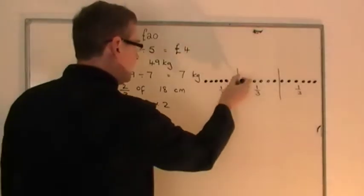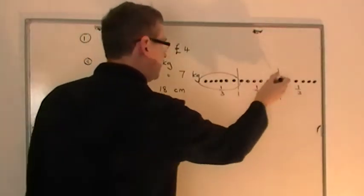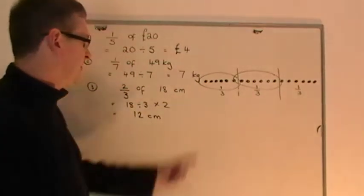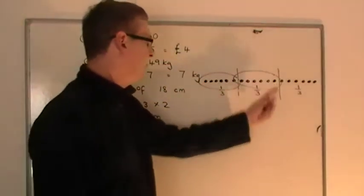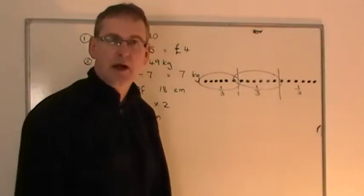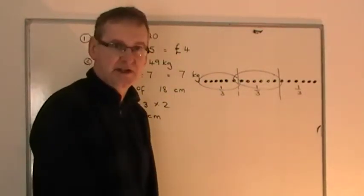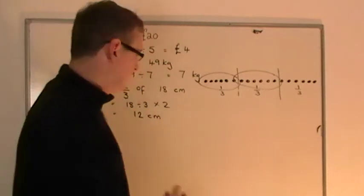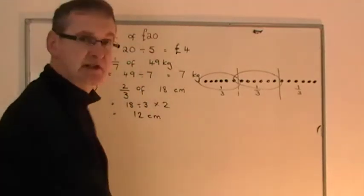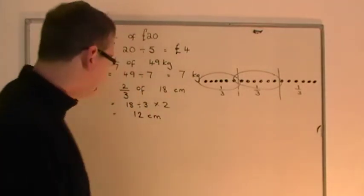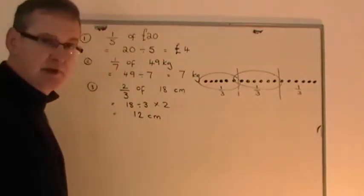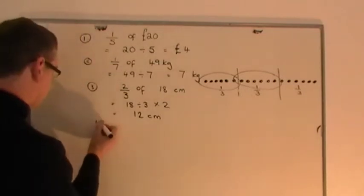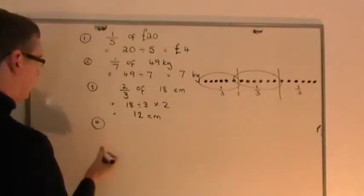So in two-thirds there's one-third, then another third — two-thirds. In those two-thirds you'll have twelve, whatever they may be: pound coins, buttons, or in this case, centimetres. And it's as simple as that. So let me do some more quickly.